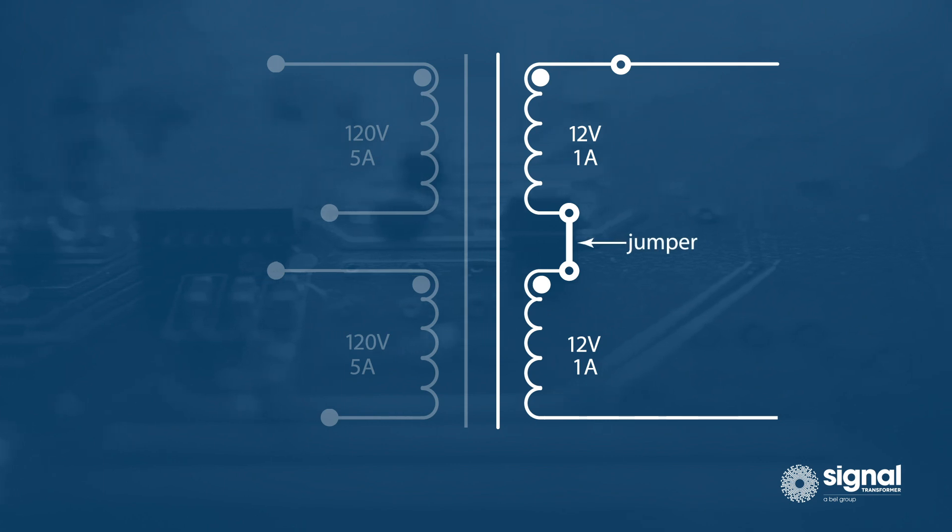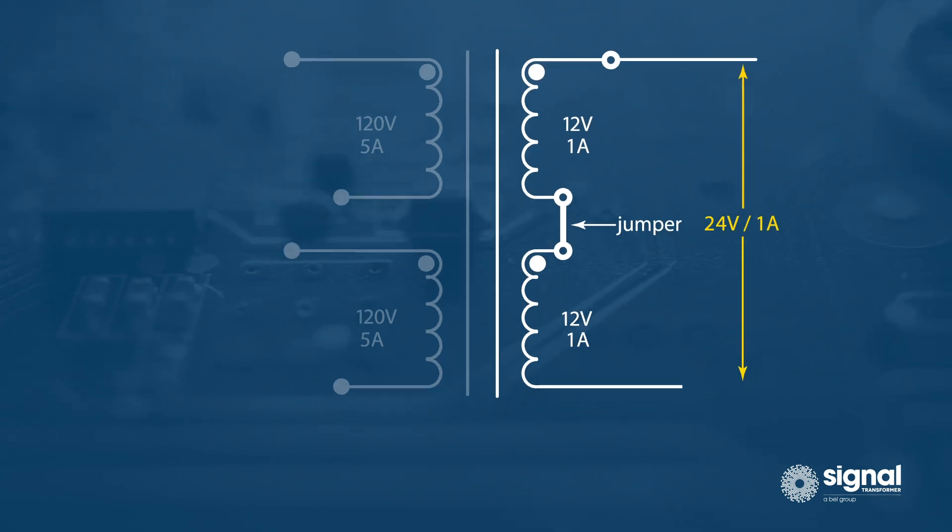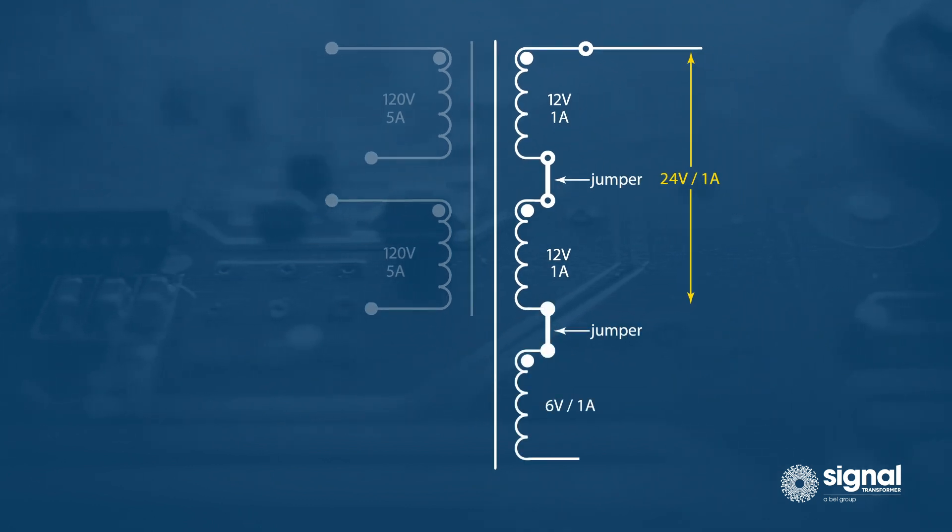Connecting two 12-volt 1-amp secondary windings in series by connecting the end of one to the start of the next results in a 24-volt 1-amp output. Adding another 6-volt 1-amp winding in series increases the output to 30 volts and 1 amp.